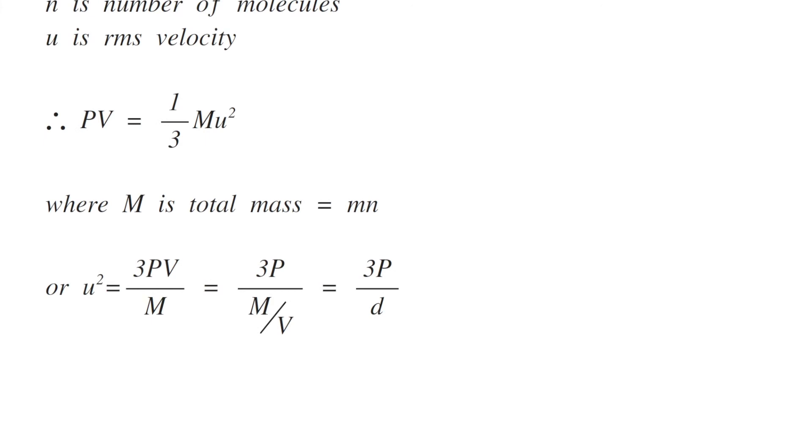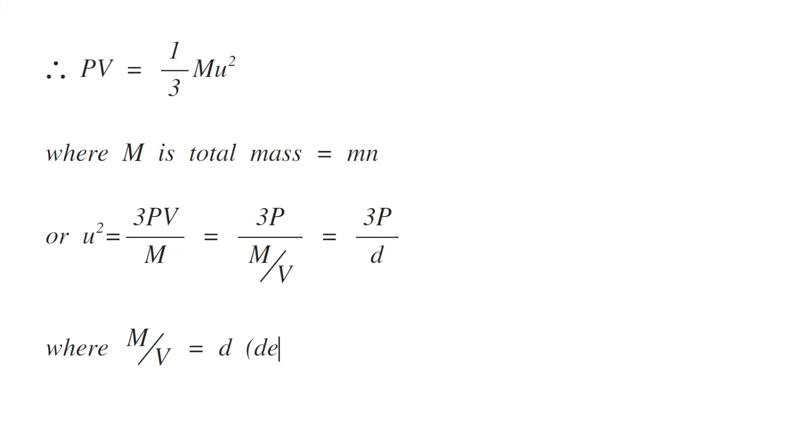So it becomes 3P/d. Therefore, u equals the square root of 3P/d, where d is the density.